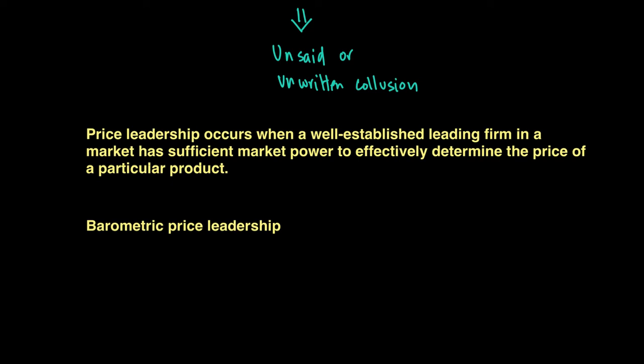To conclude, collusions can be both tacit or formal. Both these forms can be illegal because when firms come together and charge a higher price to consumers, it is unfair to the consumer because competition is curtailed. That is why regulators often put huge fines on these cartels so that the market becomes more competitive and more fair to consumers, who would otherwise be charged a much higher price.